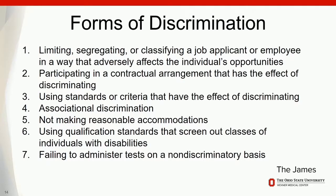Forms of discrimination include limiting, segregating, or classifying a job applicant or employee in a way that adversely affects the individual's opportunities — that's exclusion. Participating in a contractual arrangement that has the effect of discriminating: if your company hires out custodial services and that custodial service discriminates, that's your company discriminating — you can't discriminate by contract. Using standards or criteria that have the effect of discriminating, when you set workplace standards for hire or continuing employment that are based on disability and health rather than business necessity and job duties, that would be discrimination.